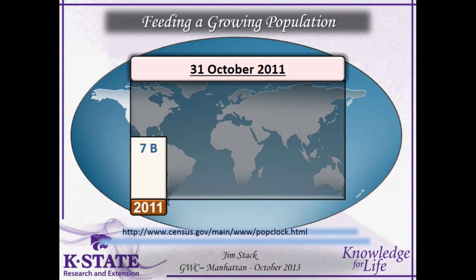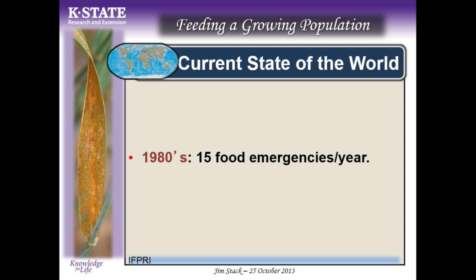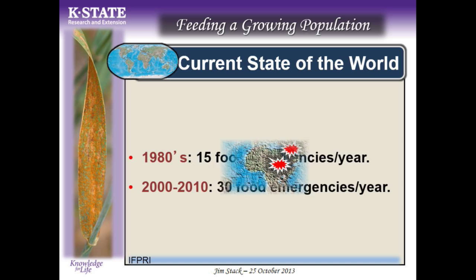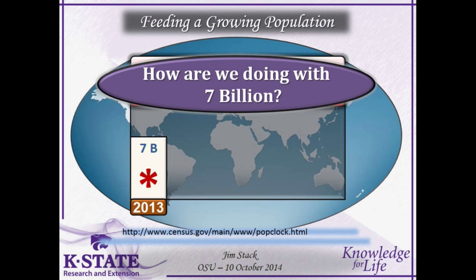In the 1980s, there were 15 food emergencies per year. In the previous decade, 30 food emergencies per year, spread around the world and not just located in Africa. In 2010, 93 million people in 70 countries required food aid for survival — and this is an annual thing. So how are we doing with 7 billion people? Not particularly well. For the past 25 to 30 years, we've been unable to meet the minimum basic food needs for 20 to 25 percent of the world's population. Every year, we add 65 million more people to our planet — that's nine more New York cities every year.